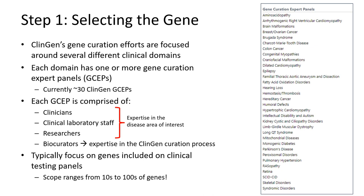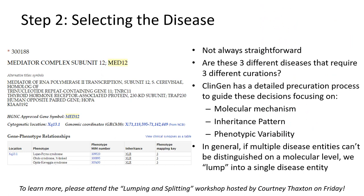I want to walk you through how ClinGen decides which genes and diseases to evaluate. The first step in the ClinGen gene curation process is selecting the genes. Within ClinGen, our gene curation efforts are focused around several different clinical domains, such as cardiovascular disorders, hereditary cancer, and neurodevelopmental disorders. Each domain may have one or more gene curation expert panels, or GCEPs, focused on specific disease areas. For example, the neurodevelopmental CDWG has GCEPs focused on intellectual disability, autism, and epilepsy. Each GCEP is comprised of experts including clinicians, clinical laboratory staff, researchers, and biocurator experts in the ClinGen curation process. Together, they review genes relevant to their disease area, typically focusing on genes included on clinical testing panels.